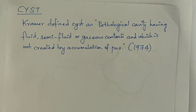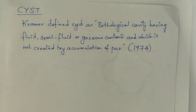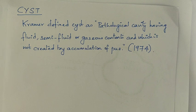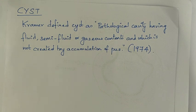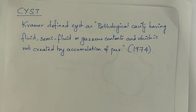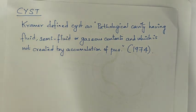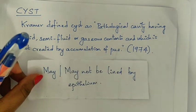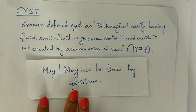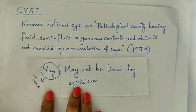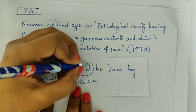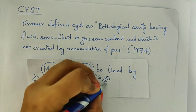Kramer in 1974 gave the gold standard definition for a cyst, still followed with certain modifications. He defined a cyst as a pathological cavity having fluid, semi-fluid, or gaseous content, which is not created by accumulation of pus. This was further modified to include that a cyst may or may not be lined by epithelium. If lined by epithelium, it is a true cyst; if not, it forms a pseudo-cyst.